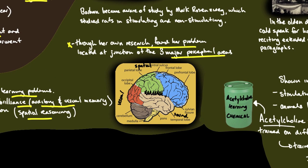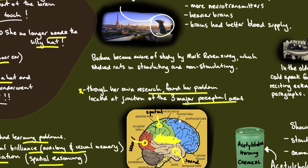Through her own research, Barbara found her problem was located at the junction of three major perceptual areas of the brain. Her area of issue was where the perceptual areas of sound lobes, visual lobe, and spatial areas all came together and joined.